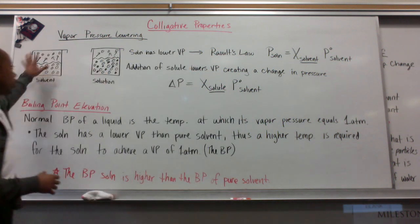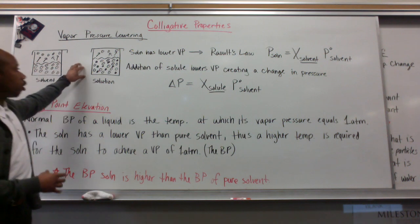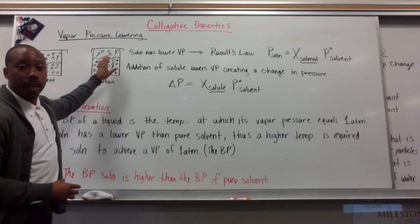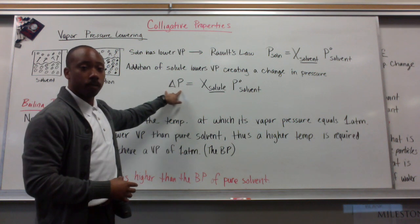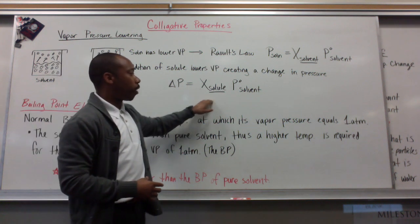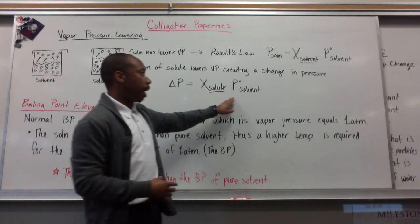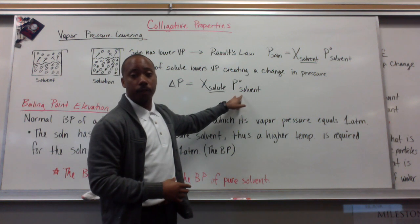We had a higher pressure with the solvent, we add solute, and we have a lower pressure now. So this delta P, or change in pressure, is proportional to the mole fraction of the solute times the partial pressure of the pure solvent.